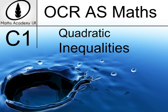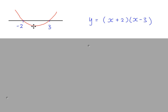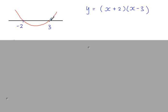Quadratic inequalities. This is the graph of y equals x plus 2 times x minus 3, a quadratic equation. There are two roots: x equals minus 2 and x equals 3. The roots correspond to points on the curve where the y-coordinate is 0, so the curve crosses the x-axis at those two points.